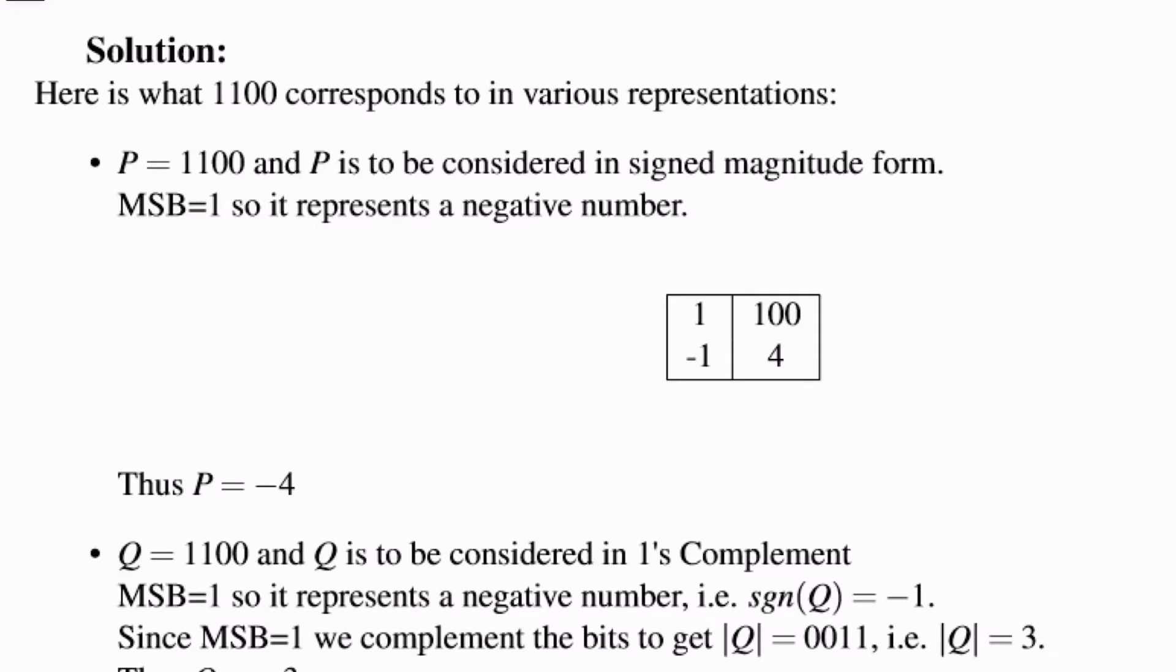So P is to be considered in sign magnitude form, and P is 1100. So in sign magnitude form, as we know, the MSB represents the sign bit and the magnitude bits correspond to the remaining bits.